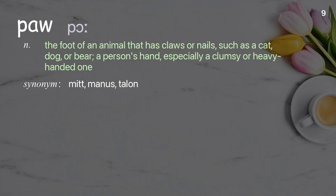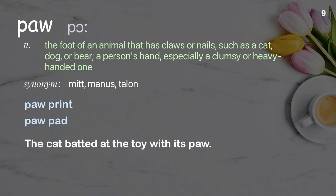Paw: the foot of an animal that has claws or nails, such as a cat, dog, or bear; also, a person's hand, especially a clumsy or heavy-handed one. Examples: paw print; paw pad. The cat batted at the toy with its paw.